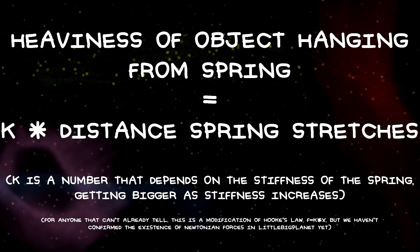Luckily for us, there's something in Little Big Planet that exhibits the exact kind of behavior we need. It turns out that springs in the game act exactly like ideal springs that obey Hooke's law. This equation basically says that if you pull twice as hard on the spring — by making it hold twice as much, for example — the spring will stretch out to twice the length.